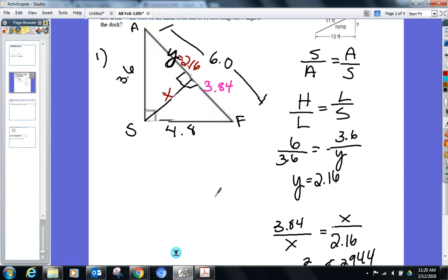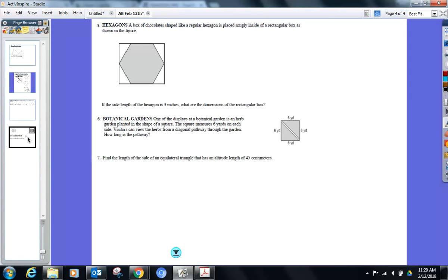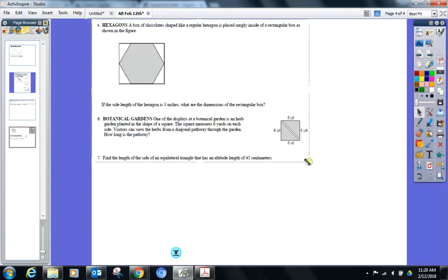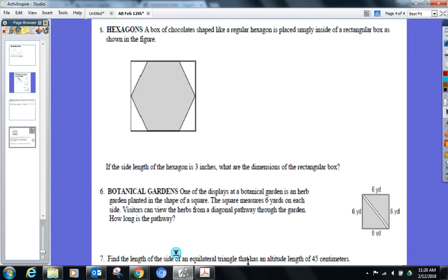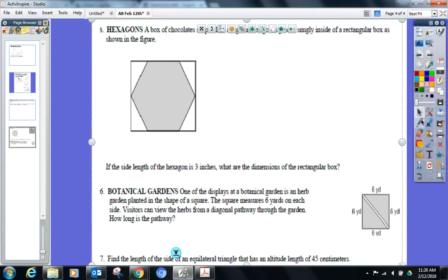I want to do one more with you that involves a special right triangle. That's the number 5 with the hexagons. Take a look at number 5 with the hexagons, please. Two reasons why I want to do this one with you. One is because it involves a special right triangle, which we'll find out in a second. And the second reason I want to do this with you is because it uses the word snuggly. Anybody seen that in a math problem before? Not me. Snuggly.